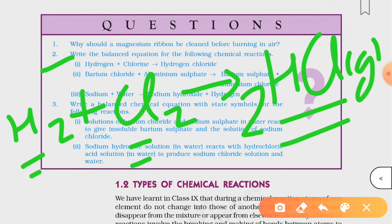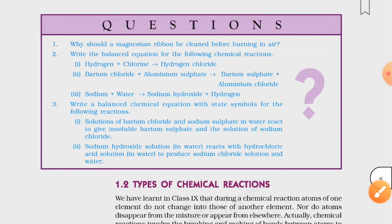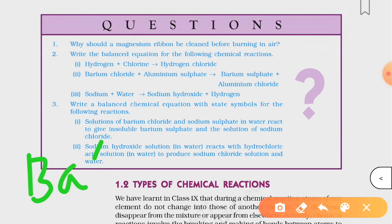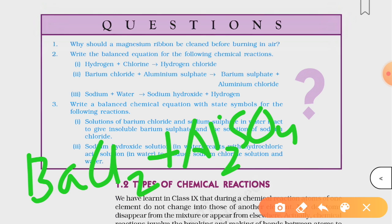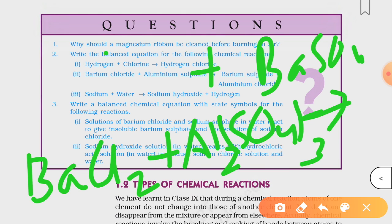To balance it, you will apply a 2 here. Now, second part: barium chloride plus aluminium sulphate gives barium sulphate plus aluminium chloride. Aluminium sulphate, which will be Al2(SO4)3, and they will give barium sulphate, BaSO4, plus aluminium chloride, which will be AlCl3.